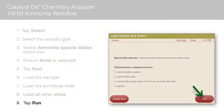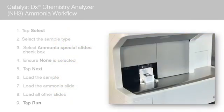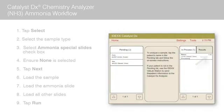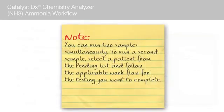Tap Run. The Catalyst DX begins to process the patient sample automatically. A timer displays next to the patient's name in the In Process list, indicating the time remaining until the run is complete. Note: you can run two samples simultaneously. To run a second sample, select a patient from the pending list and follow the applicable workflow for the testing you want to complete.